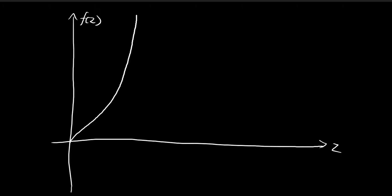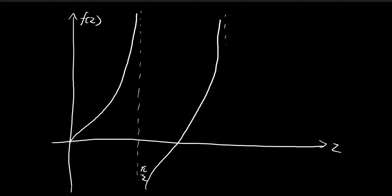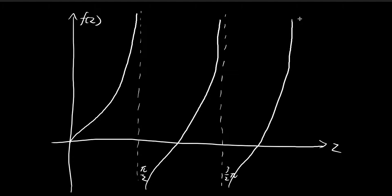Tangent Z is going to look something like this — going all the way to infinity, and this will be π/2. Then it's going to emerge from the bottom again and shoot all the way up to infinity again, and this time this is going to be 3π/2. This behavior just keeps repeating itself, so this will be 5π/2, and so on. So this is how a tangent Z graph would look.